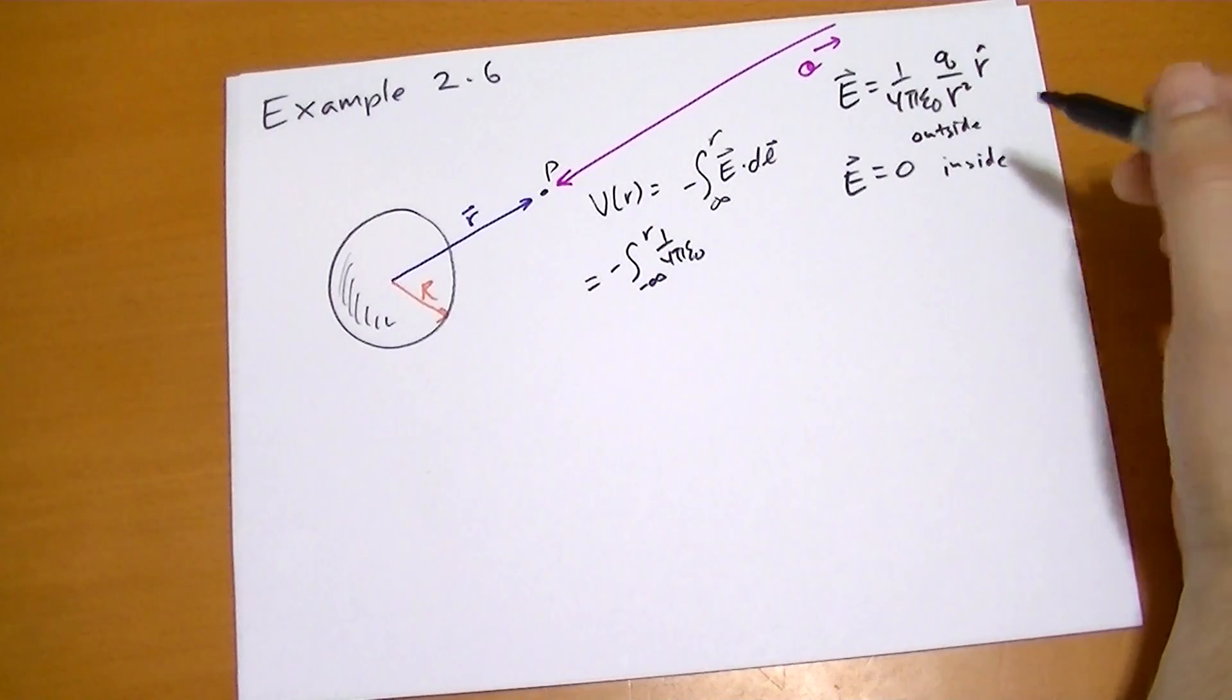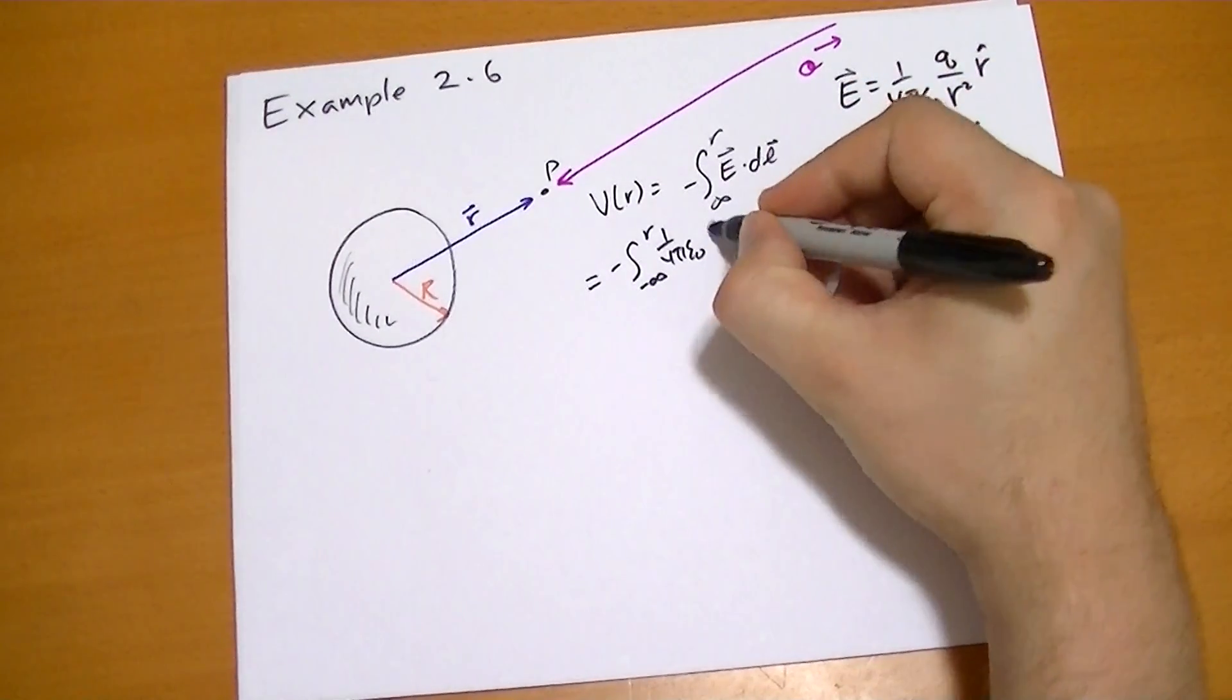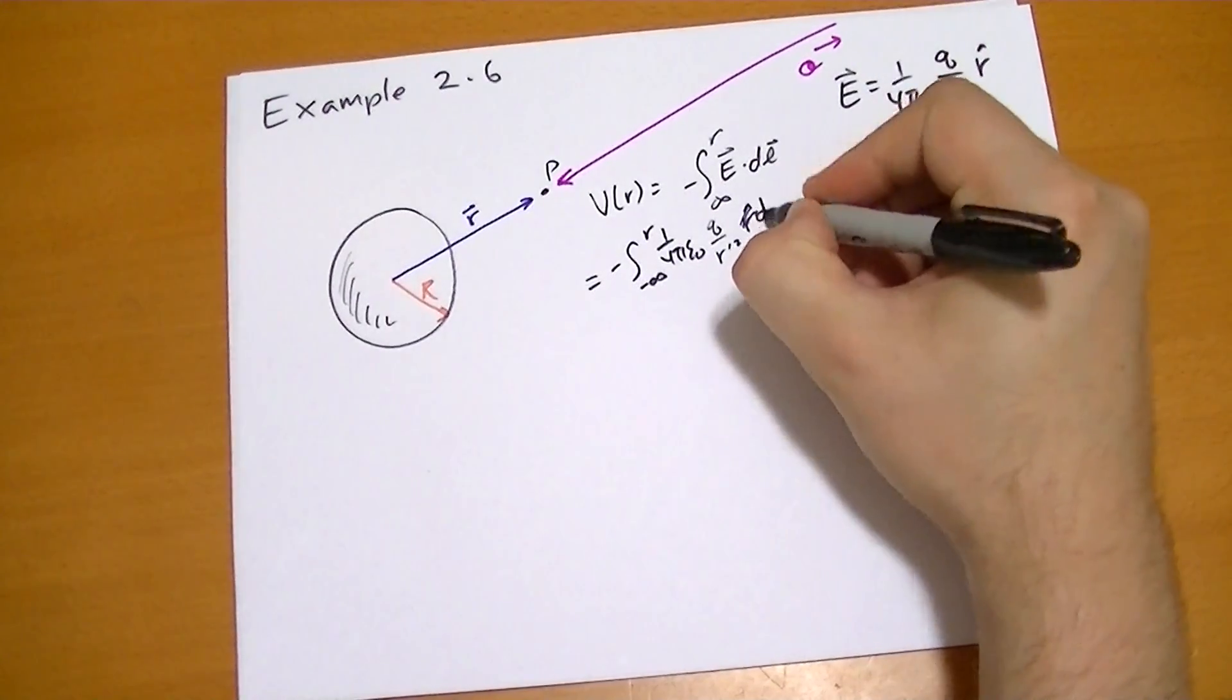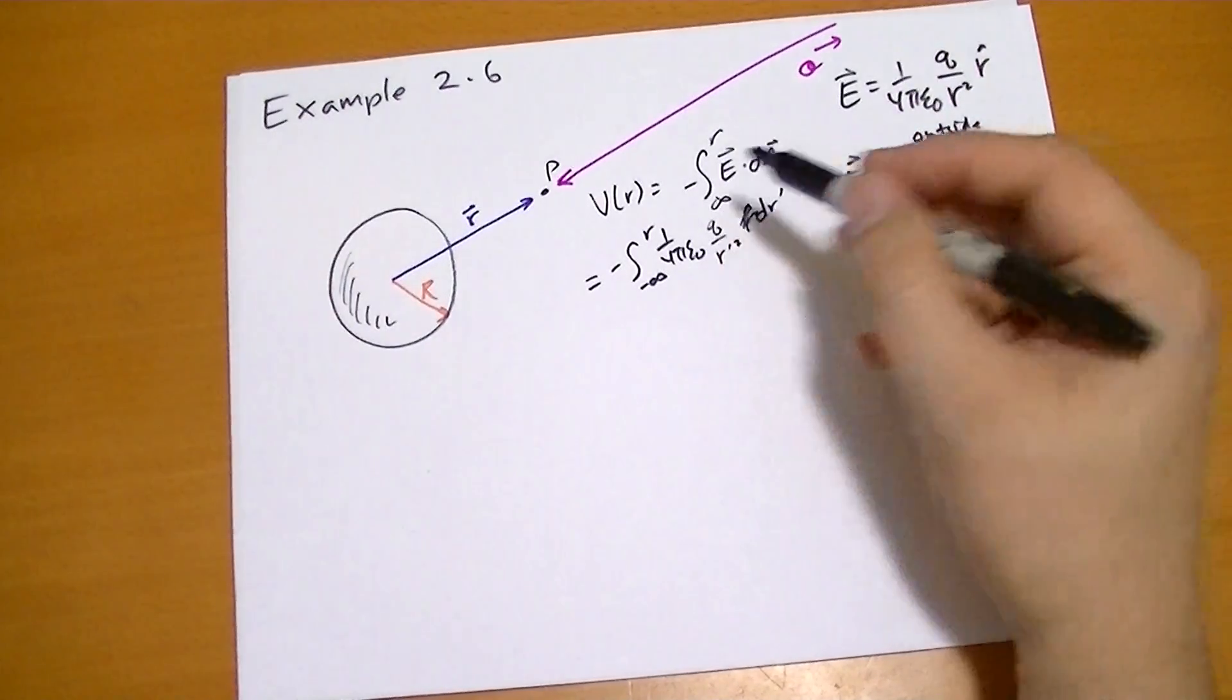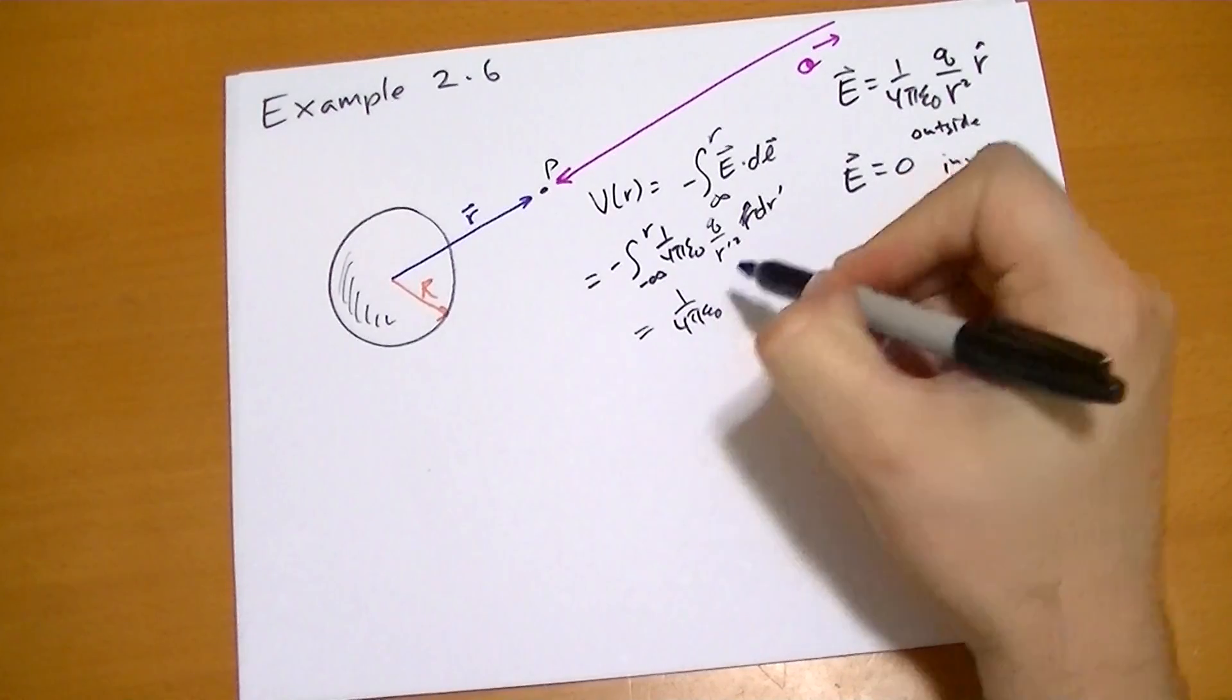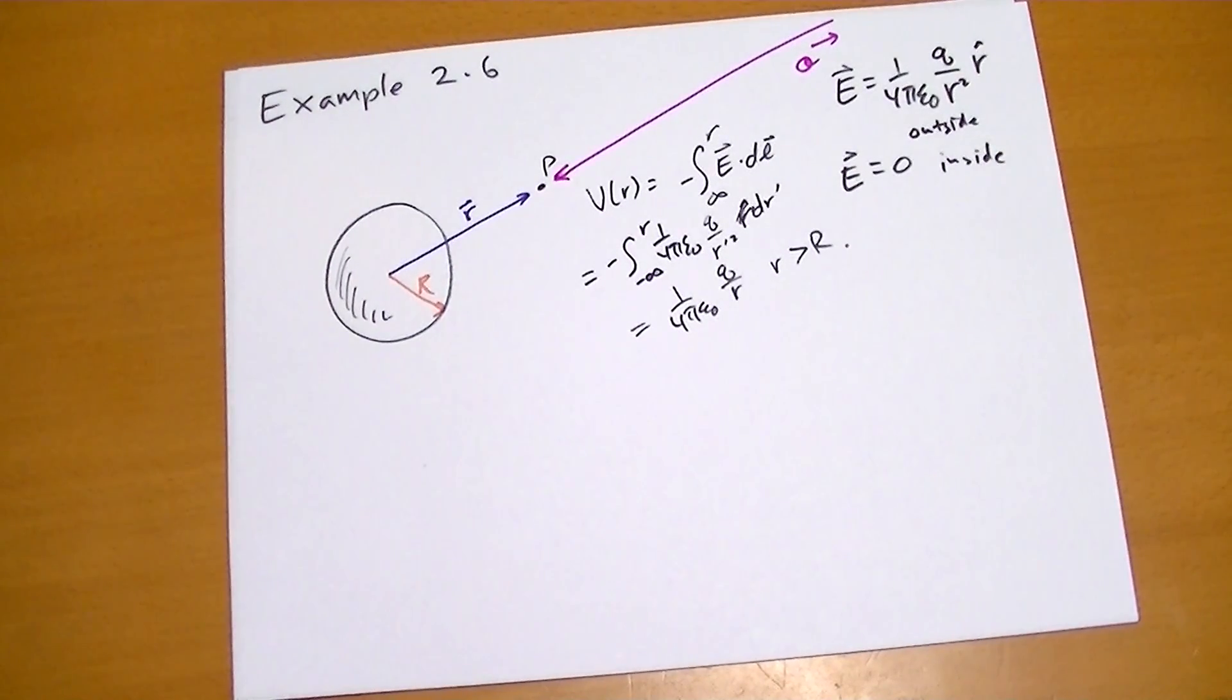So it's just q over r prime squared r prime hat dr prime. And so obviously the integral for this is just negative 1 over r. So we get 1 over 4 pi epsilon naught q over r. This is for r is greater than R. That was rather easy.